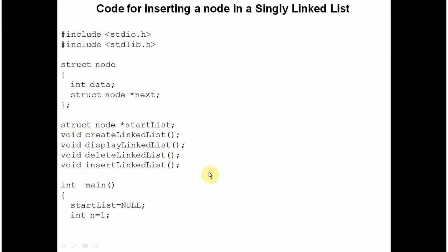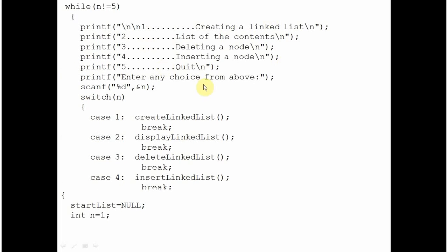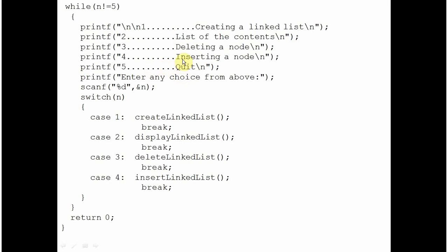Here there are four prototypes. They are very explanatory. One is for creating linked list, this will display the linked list content, this will delete the linked list content, and here is the method I am going to explain that inserts a new node. When you run this program, you get a menu which will show you five options. Press 1 to create a linked list, press 2 to show its content, 3 to delete, 4 is for inserting a node which we are going to understand. The program will terminate when the user presses 5.